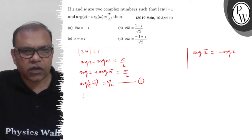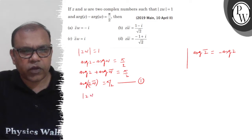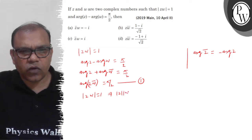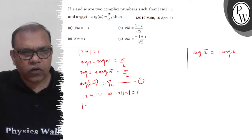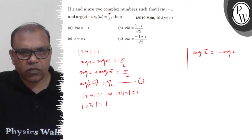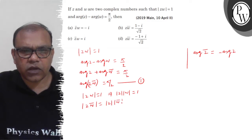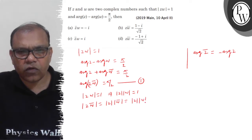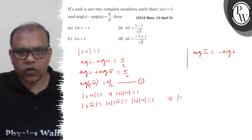Now, the question gives us mod of z into omega equals 1, which implies mod of z into mod of omega equals 1. Now, mod of z·omega-bar equals mod of z into mod of omega-bar, which equals mod of z into mod of omega, which equals 1. So this implies mod of z·omega-bar equals 1.